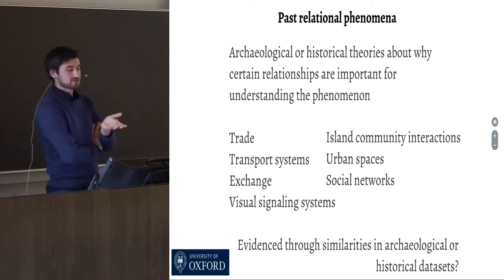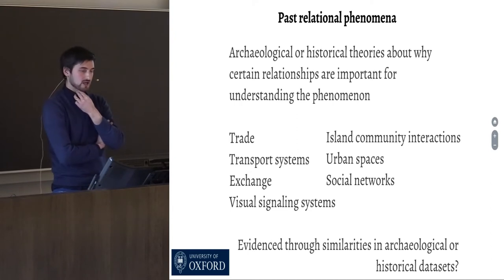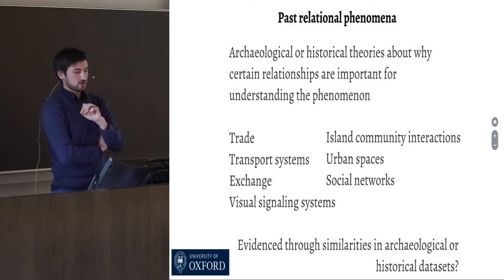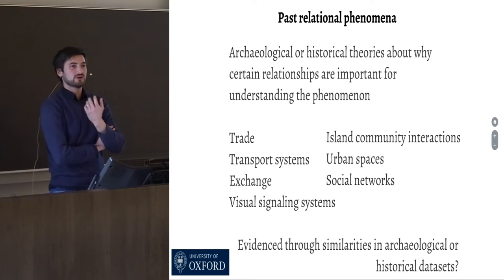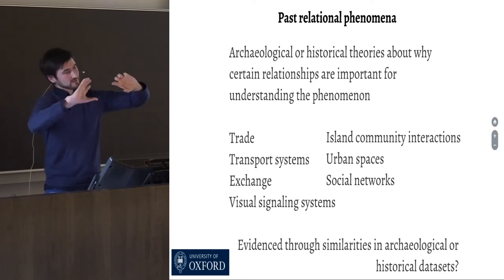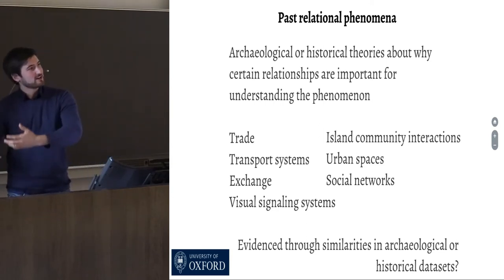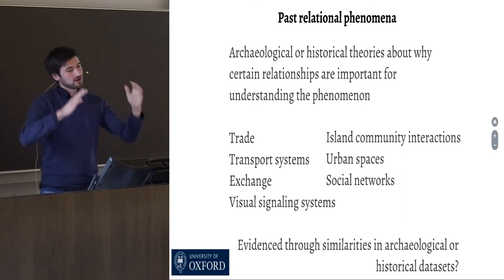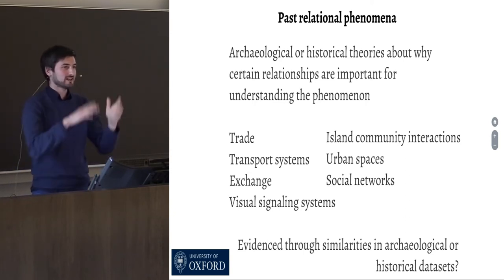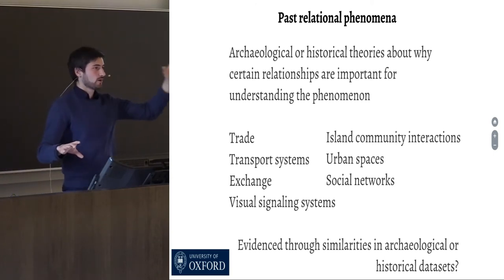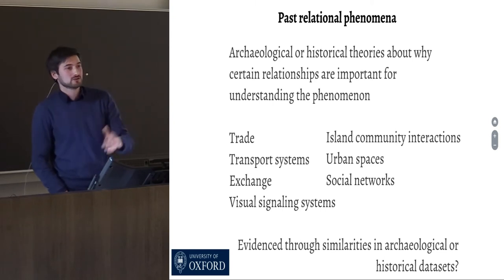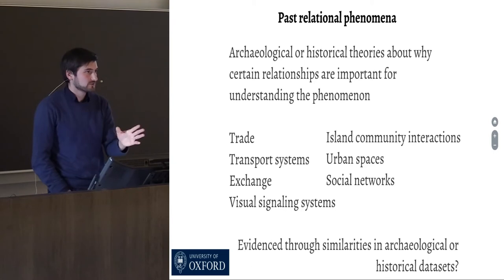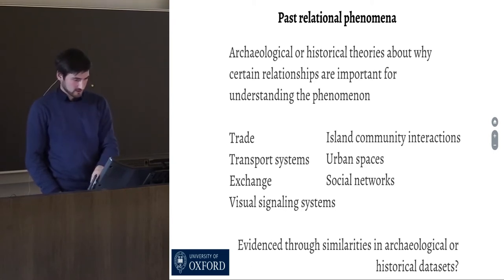There's a huge diversity of past relational phenomena already explored with network science in Roman studies. What they all have in common is they formulate arguments and consider theories about why relationships matter — they don't just study relationships for the sake of it. Don't use network science as an excuse to say certain things if the archaeological or historical data doesn't allow you to say those things. That's just bad archaeology and bad network science.